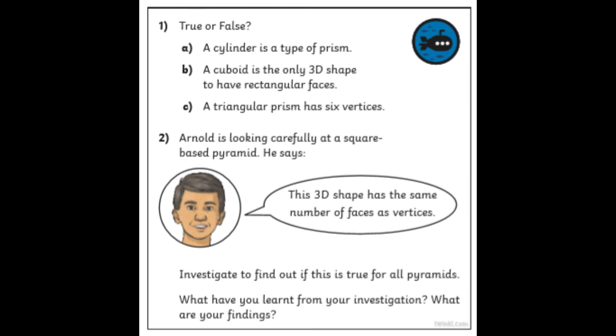Right, chilli two. True or false? So a cylinder is a type of prism. And if you're not sure, go back to the example I showed you with Charlie's shapes, because I talked about prisms there. B: a cuboid is the only 3D shape to have rectangular faces. True or false? And then C: a triangular prism has six vertices. Does it? Prove it. Maybe try and draw it. Can you maybe find one in your home that you can count to check? All right, question two. Arnold is looking carefully at a square-based pyramid, and he says, this 3D shape has the same number of faces as vertices. Can you investigate to find out if it's true for all pyramids? And what have you learned from your investigation? What are your findings? So look back at what he's saying. He said, this 3D shape has the same number of faces as vertices. Is that always the case for pyramids? Can you find out and prove it one way or the other, please, year five?